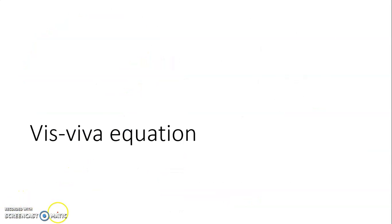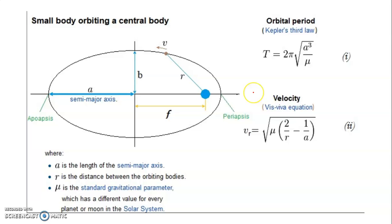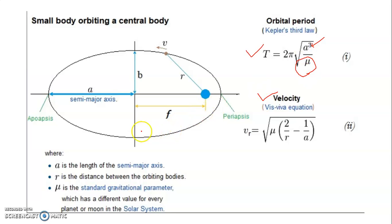Now we look at the Vis-Viva equation. With the Vis-Viva equation, we can calculate the orbital period and also the velocity of a body while it is orbiting. From this equation, A is the semi-major axis and mu (ν) is a constant combining the gravitational parameter and the mass at the center of mass.